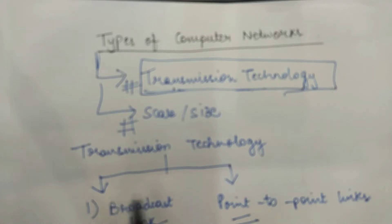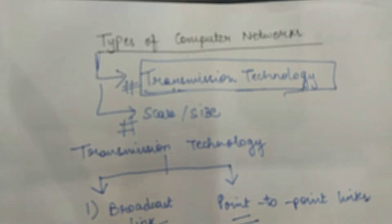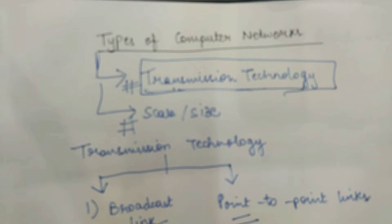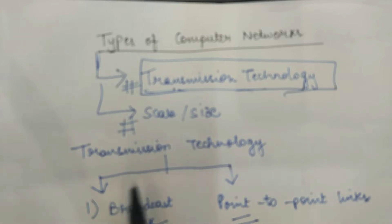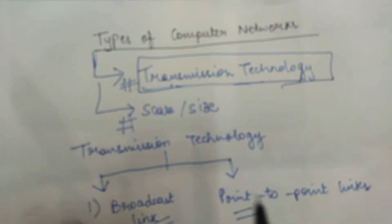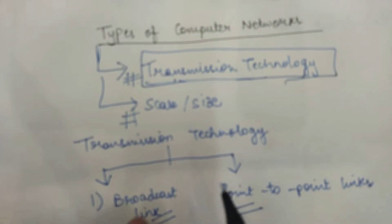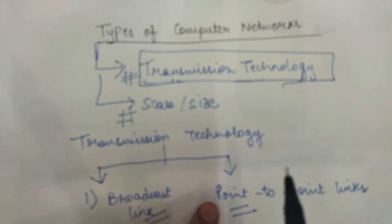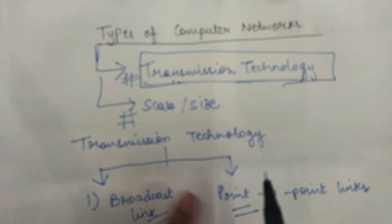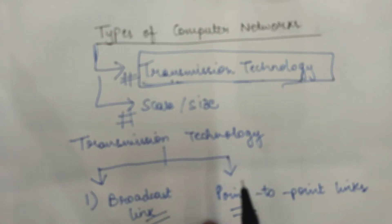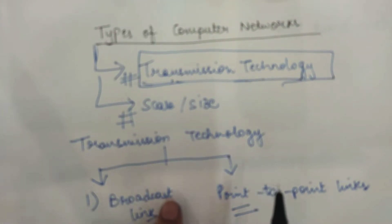Broadly speaking, there are two different ways in which you can transmit the data from the sender to the receiver. One is the broadcast link and the other is the point-to-point link. So these two transmission technologies we will study in detail today.